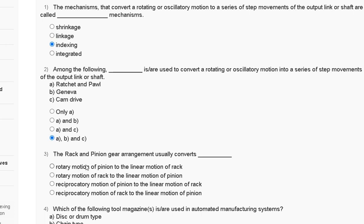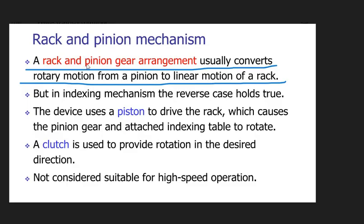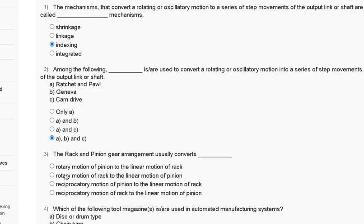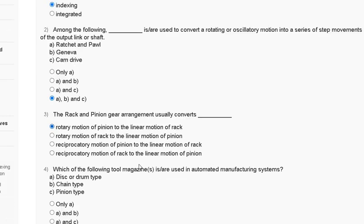Question number three: the rack and pinion gear arrangement converts — first, rotatory motion of pinion to the linear motion of rack; second, rotatory motion of rack to the linear motion of pinion; third, reciprocatory motion of pinion to the linear motion of rack; fourth, reciprocatory motion of rack to the linear motion of pinion. The rack and pinion gear arrangement converts rotatory motion of the pinion to linear motion of the rack. So the correct answer to question number three is option A.